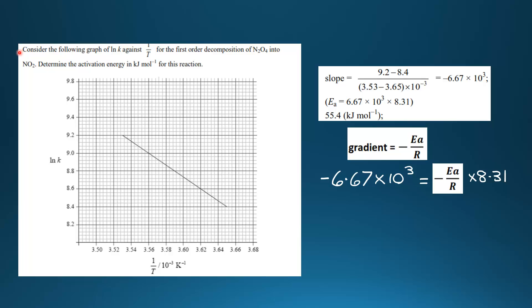Here is our example. Consider the following graph of ln k against 1/T for the first order decomposition of N₂O₄ into NO₂. Determine the activation energy in kilojoules per mole for this reaction.